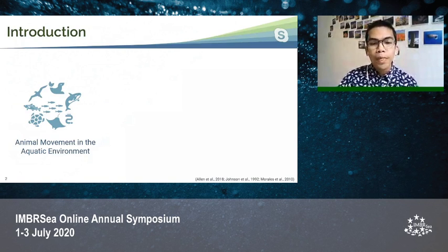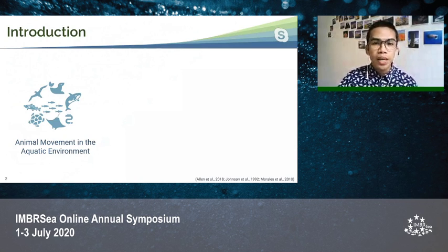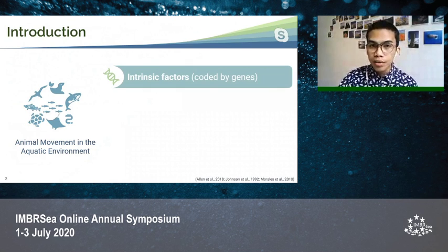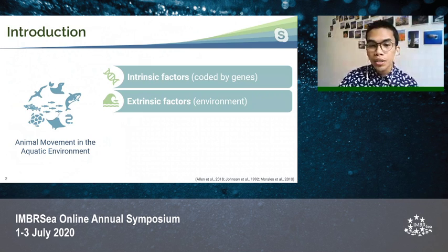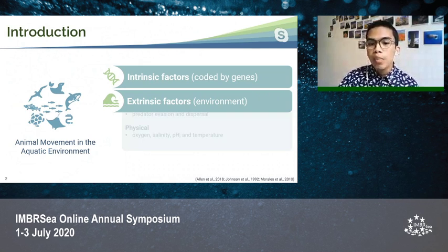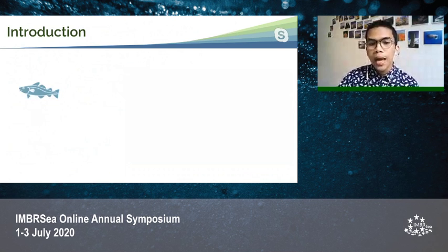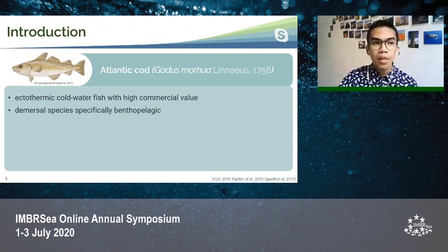Animal movement, especially in aquatic environments, is influenced by a complex interaction of intrinsic factors which are coded by genes, and also extrinsic factors from the environment. These can be subdivided into either biological or physical. One of the marine species that has been the subject of many movement studies is the fish species Atlantic Cod.